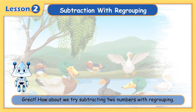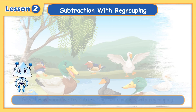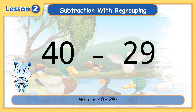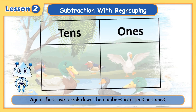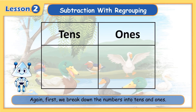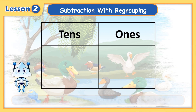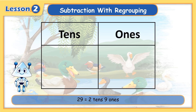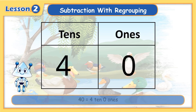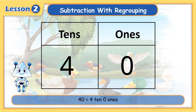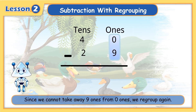Great! How about we try subtracting two numbers with regrouping. What is forty minus twenty-nine? Again, we break down the numbers into tens and ones. Twenty-nine equals two tens and nine ones. Forty equals four tens and zero ones.